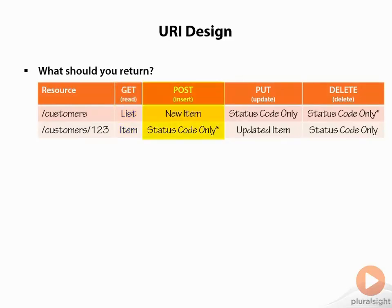If we POST to the customers endpoint with data that represents a customer, it'll create a new item, assuming it's all correct. We should return from that POST a new version of the item that was inserted — not only that the creation happened, but a formatted object representing that new item. The reason we do that is sometimes part of the creation process involves setting default properties and generating the key. So returning that brand new object is very useful, representing the last version of the object as it existed on the server.